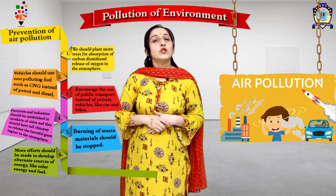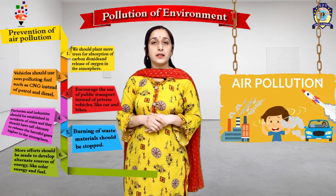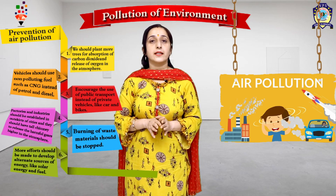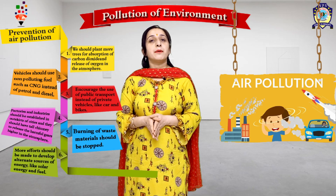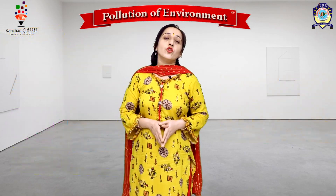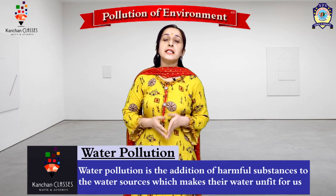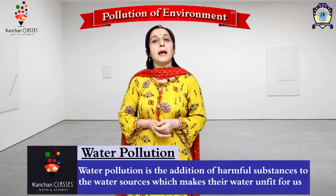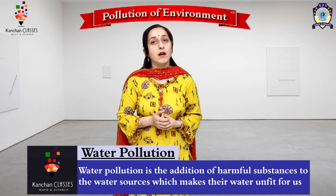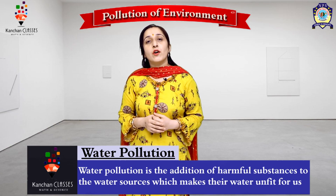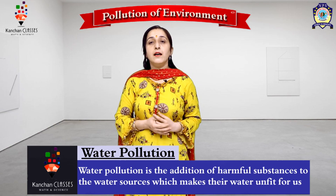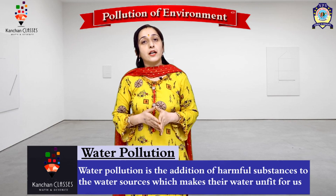The next prevention is to use non-polluting fuels like CNG. We should use fuels that cause less pollution. So those were the preventions for air pollution. Next is water pollution. Water pollution is the contamination of water — meaning our water becomes dirty or bad.